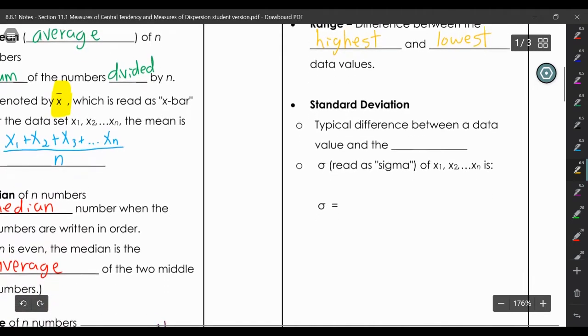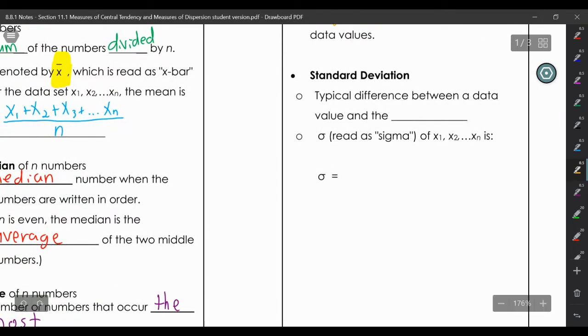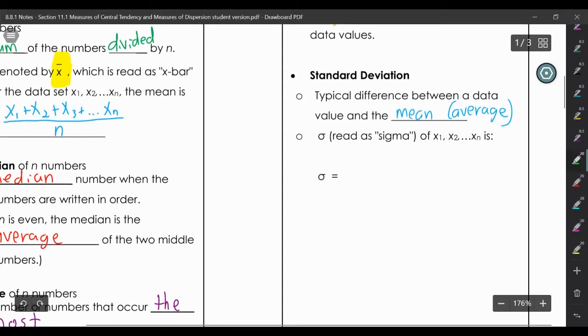The new one you probably have not heard of is called standard deviation. The definition is the typical difference between a data value and the mean or average. The symbol for that is this lowercase sigma. You may remember when we talked about summation notation we have the capital sigma.